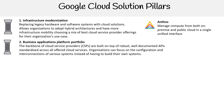Moving on to business applications platform portfolio. The backbone of CSPs are built on top of robust, well-documented APIs standardized across all offered cloud services. Organizations can focus on the configuration and interconnections of various systems instead of having to build their own. We're talking about Cloud SDK, Cloud API, Cloud CLI, and the Google Cloud documentation.